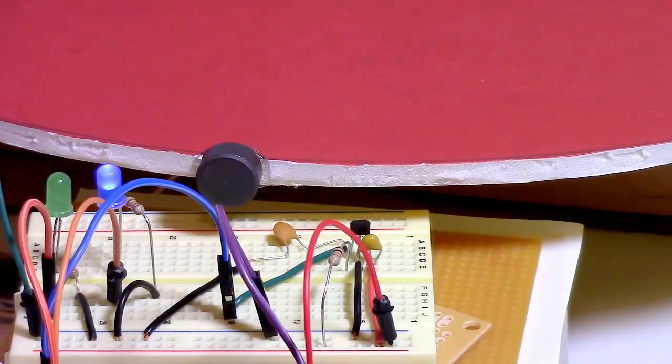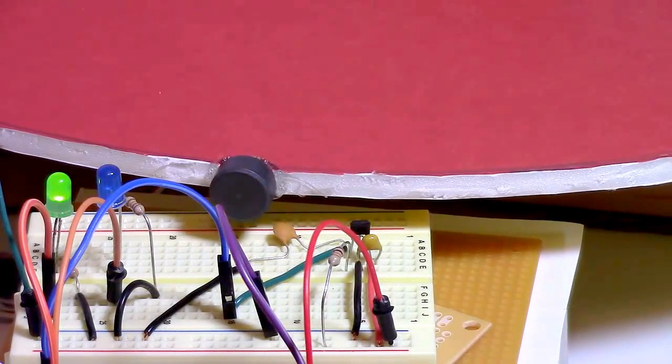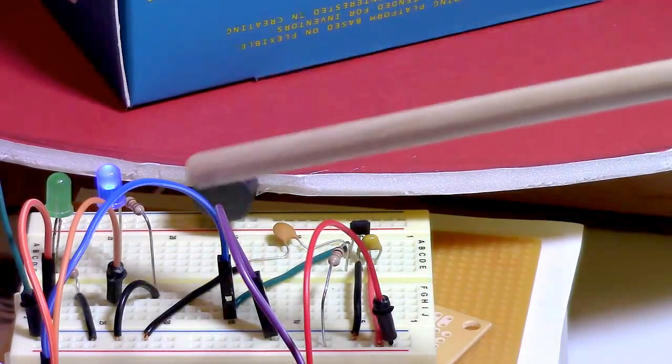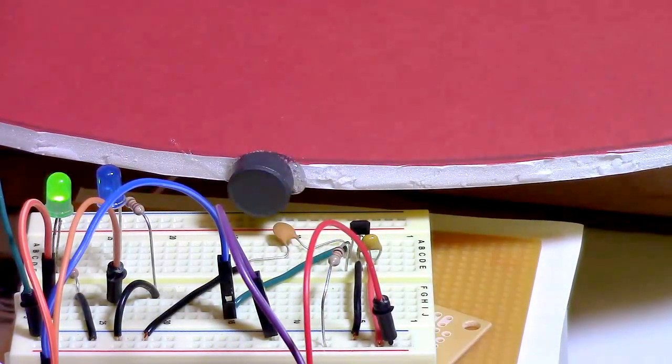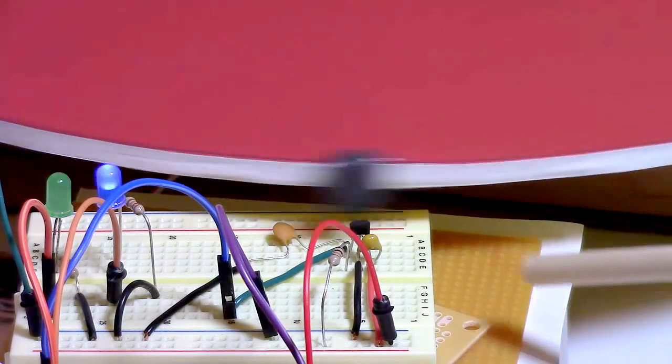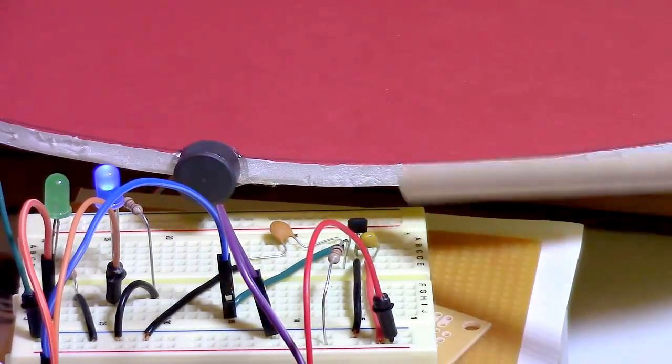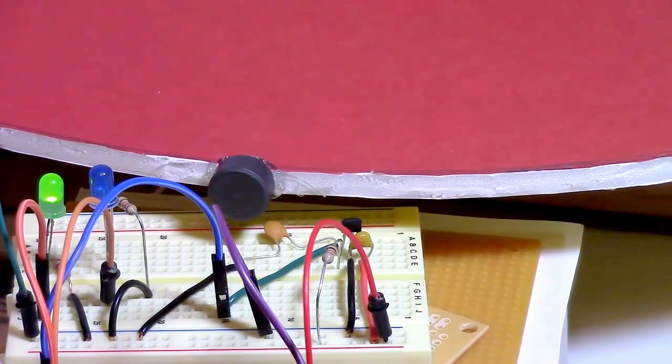For a close-up of the Hall Effect sensor and the magnets and the LEDs changing, we can see that the blue LED lights up when the north pole of a magnet passes the sensor. There's the Hall Effect sensor right there. Looks like a stripped down transistor.